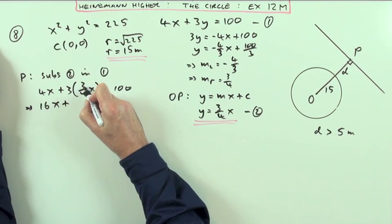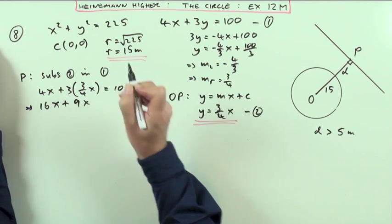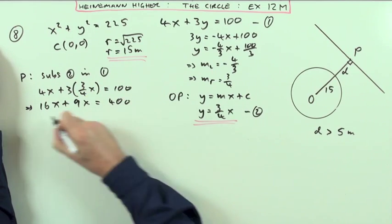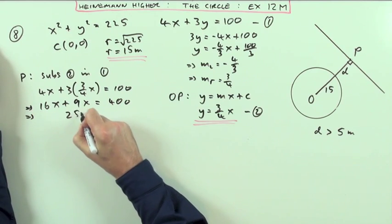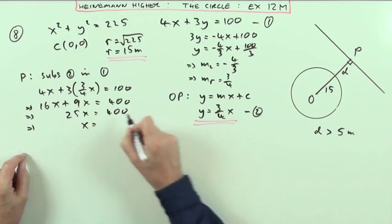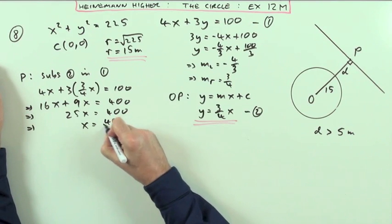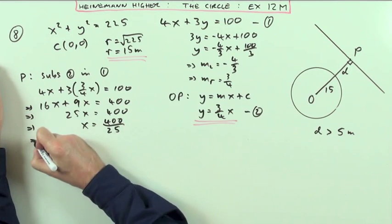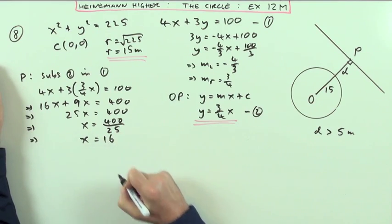I'll multiply it all by 4: 16x + 9x equals 400. That's 25x = 400, so x will be 400 divided by 25. You know there's 4 twenty-fives in every 100, so that's going to be 16.